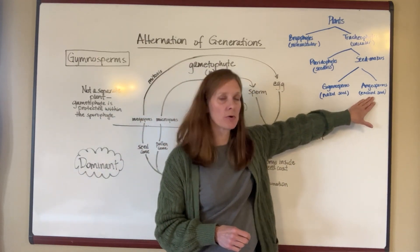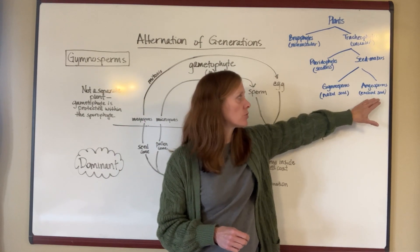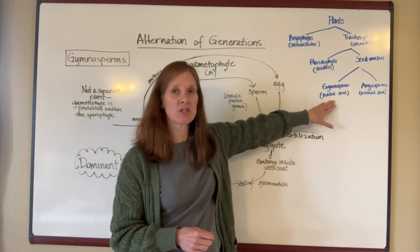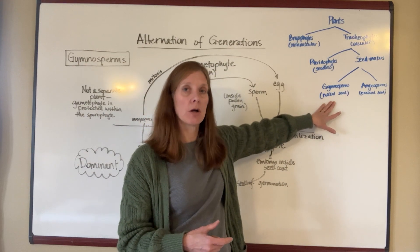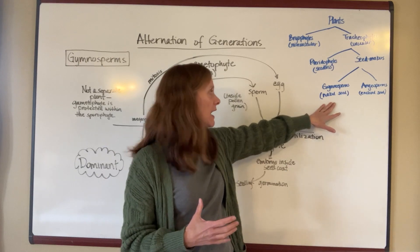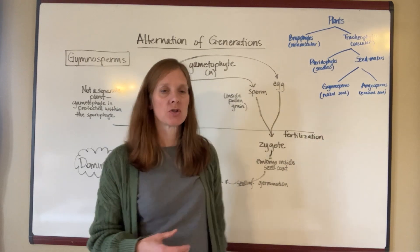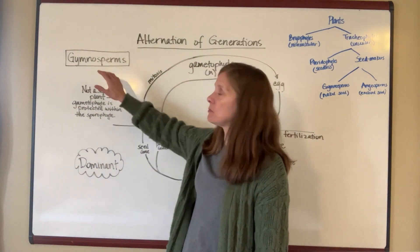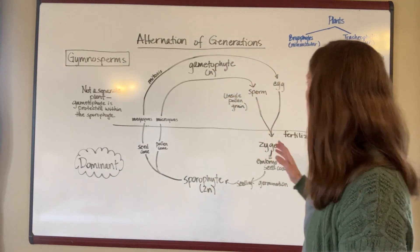An angiosperm produces an enclosed seed, and so these are what we commonly think of as the flowering plants. Whereas the gymnosperms are more your conifers — your pine trees, your fir trees, trees like that — and they have what's classified as a naked seed. So today we're hitting the gymnosperms, and that's going to be the alternation of generation cycle that we're going to talk about today.